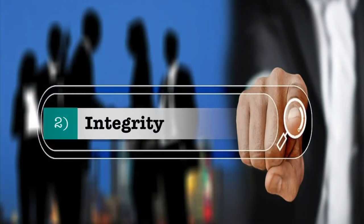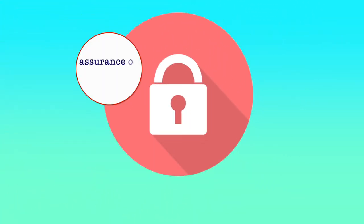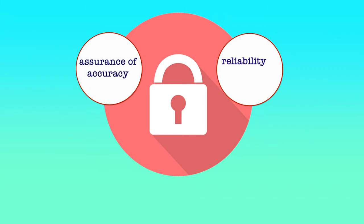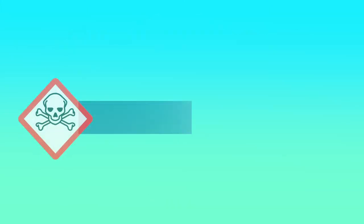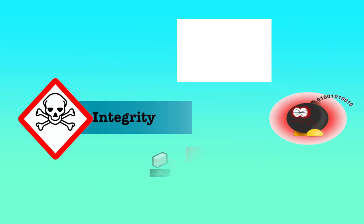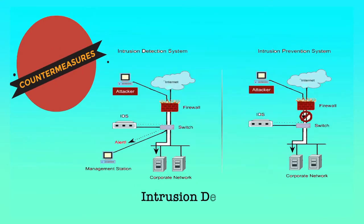The second security principle is integrity, which means that the integrity of data is protected when the assurance of accuracy and reliability of information and systems is provided and unauthorized modification is prevented. The threat sources to integrity are viruses, logic bombs and backdoors. The countermeasures to address these threat sources are strict access control, intrusion detection and hashing.